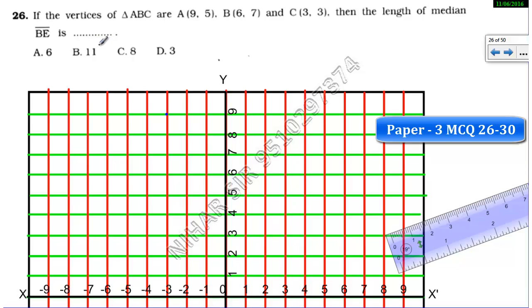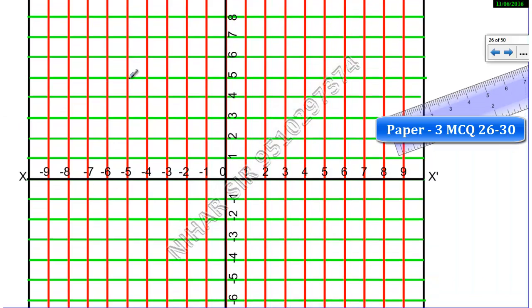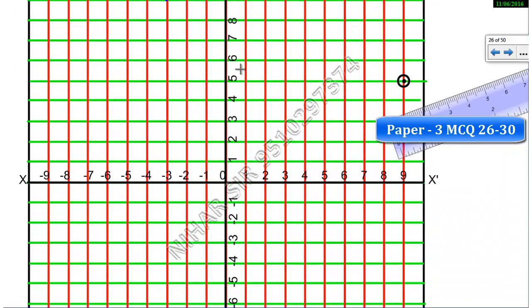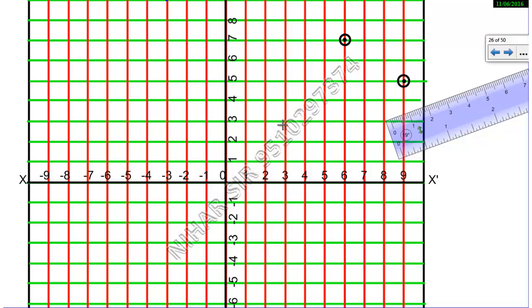Hello friends, let's solve MCQ 26 of paper number three. If the vertices of triangle ABC are A(9,5), let's denote the vertices: A is (9,5), which means x is 9, y is 5. So this will be (9,5). Then we have B(6,7), so (6,7), and C(3,3), so (3,3). Let's draw the triangle.